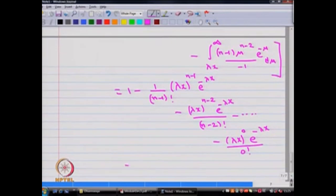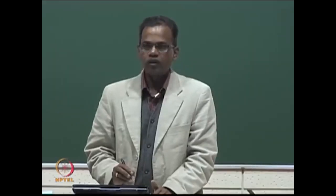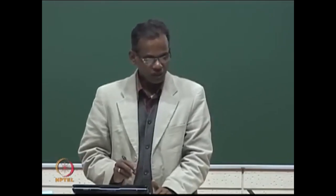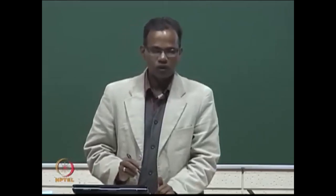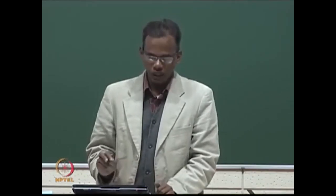This can be written in the compact form: 1 minus summation from i equal to 0 to n minus 1 of (lambda x) to the power i times e to the power minus lambda x, divided by i factorial. Here we have derived the CDF of the gamma distribution when one of the parameters is a positive integer. This result will be useful in finding the total time spent in the queuing system, which will be discussed in later modules.